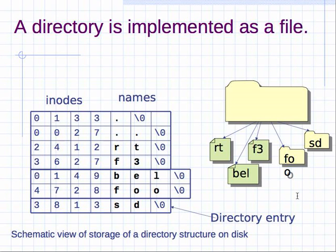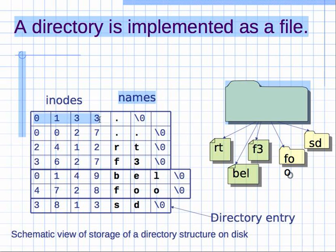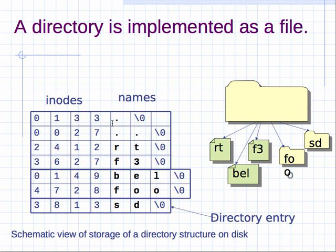A directory is implemented as a file. If you were to look inside a directory, what you would really see is a table of inode numbers, and for each inode number a name. For example, in a particular directory you will have an inode for the current directory itself — dot — and dot-dot, which is the parent directory. These are null-terminated strings, so even for dot you will have a null termination character, and dot-dot points to the inode that corresponds to the parent directory.